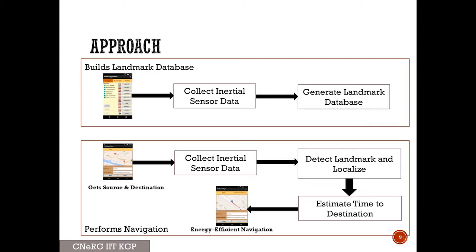In our approach we have two different steps. In the first step, we use a data collection app to collect the set of landmarks — we use the inertial sensors to detect and identify landmarks and construct a database of landmarks. In the next step, when we let the app run, commuters provide the source and destination using our app, and then our app collects inertial sensor data, detects landmarks, and using our framework it localizes — showing the current location on the fly and estimating the time to reach the destination. These are the two steps.